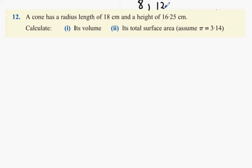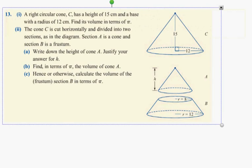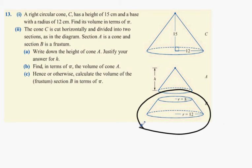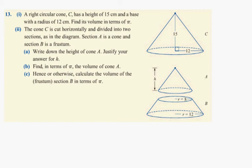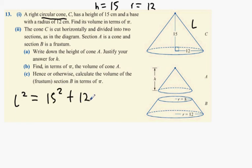Question 12: a cone sits on top of what's called a frustum — basically a cone with the top chopped off. The cone has a height of 15 and a radius of 12. Cone formulas are in play. If we have h and r, what letter is missing? The slant height, l. We need to use Pythagoras's theorem to find it.